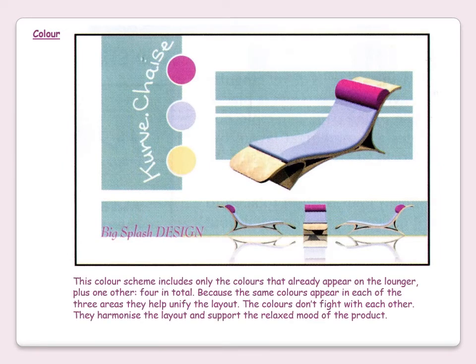This color scheme includes only the colors that already appear on the lounger plus one other — four in total. Because the same colors appear across the layout, they help to unify it and tie everything together. The colors don't fight with each other; they harmonize the layout and support the relaxed mood of the product. Thinking back to color theory, all of these colors work well together — this is harmony.